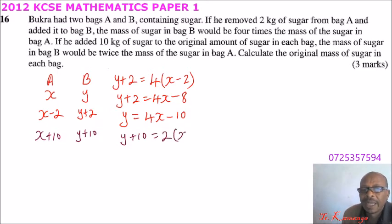So 2 times X plus 10. So we say Y plus 10 is equals to 2X, we open the bracket, plus 20. Take 10 to the other side, we have Y is equals to 2X. This will be minus, so we have 20 minus 10, we have 10.